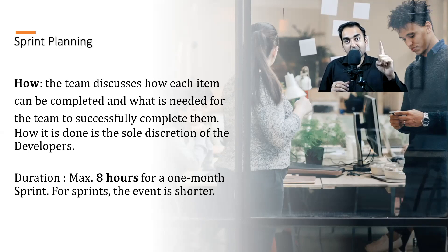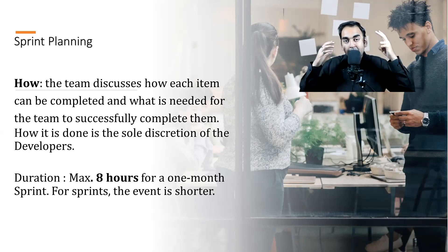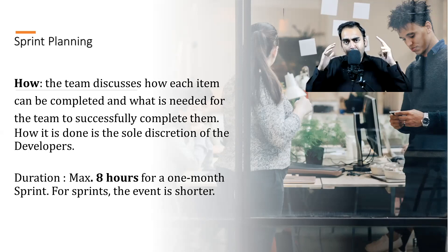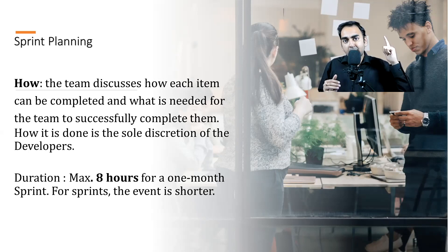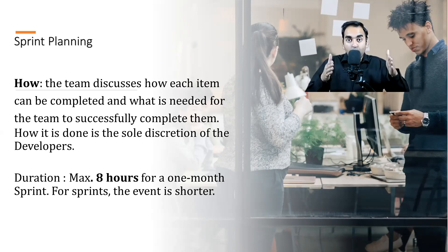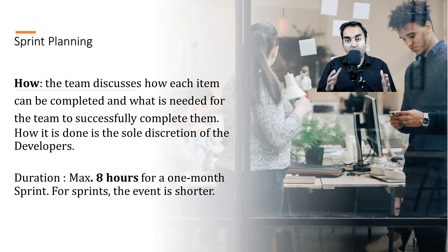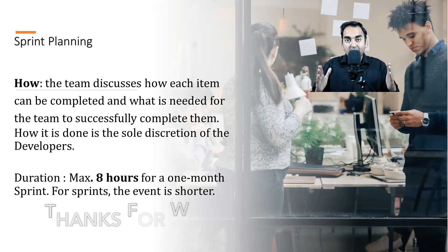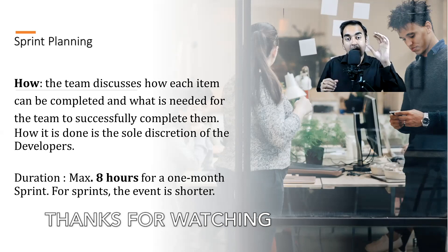In short, the team needs to answer three questions: why something needs to be done — answered by the product owner; what needs to be done — determined by the team based on past performance, team capacity, and definition of done; and how it needs to be done — which is the sole discretion of the developers. The timebox is eight hours for a one-month sprint and shorter for shorter sprint cycles.